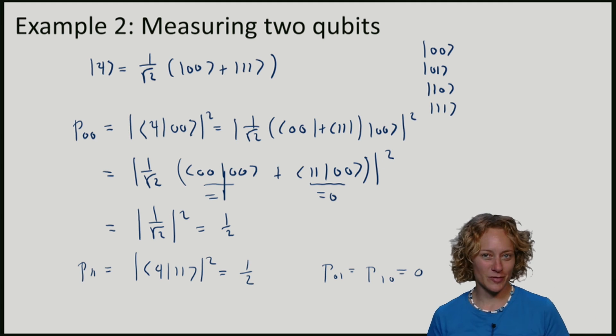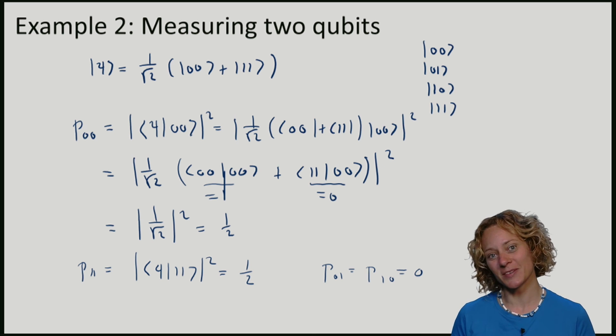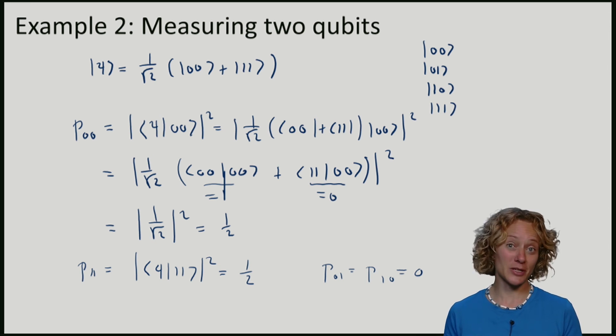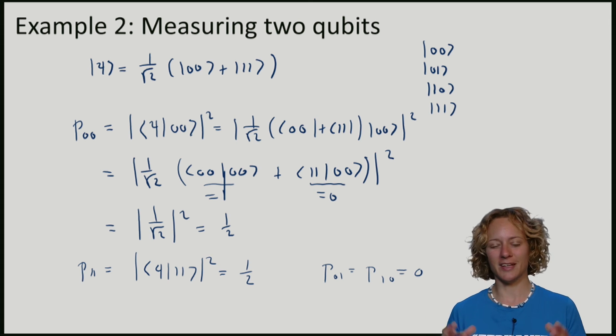Even though I guess we can see this from the rule that probabilities add up to one, you should do an independent calculation to convince yourself that this is really true. So we've seen now some more examples of measuring qubits in the basis.